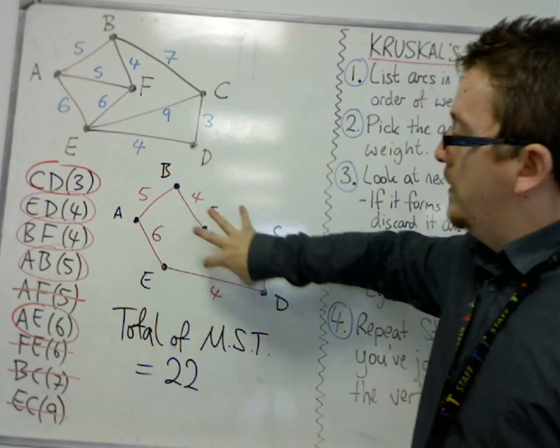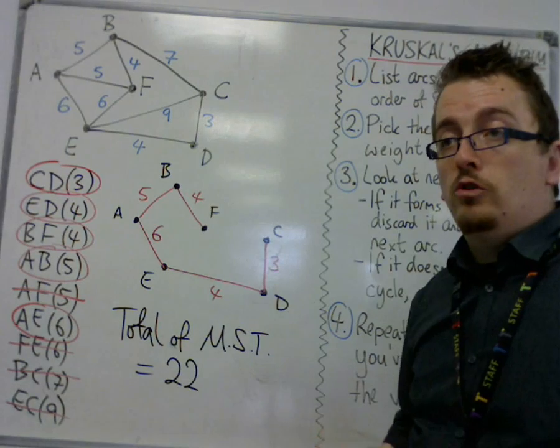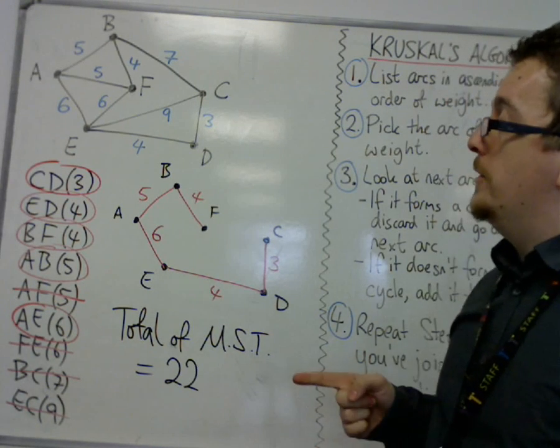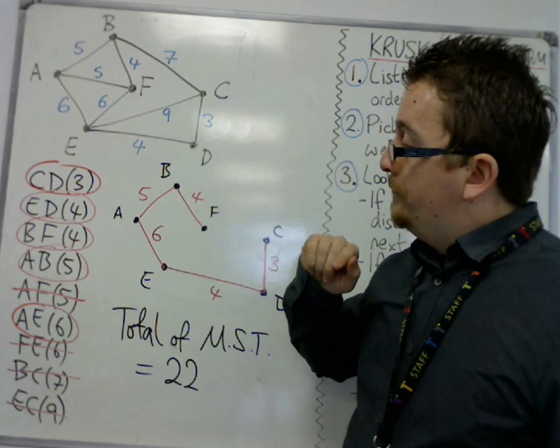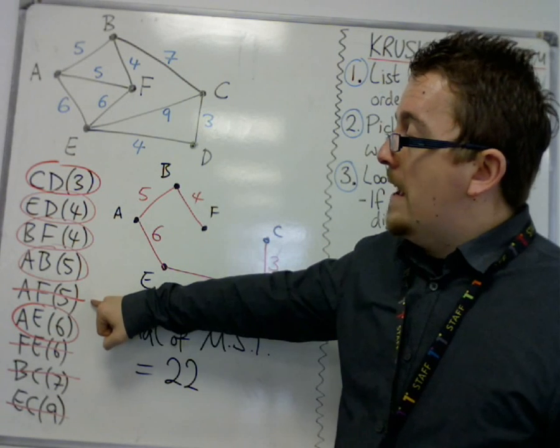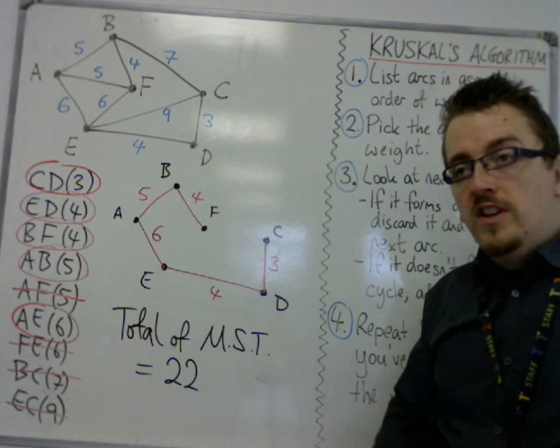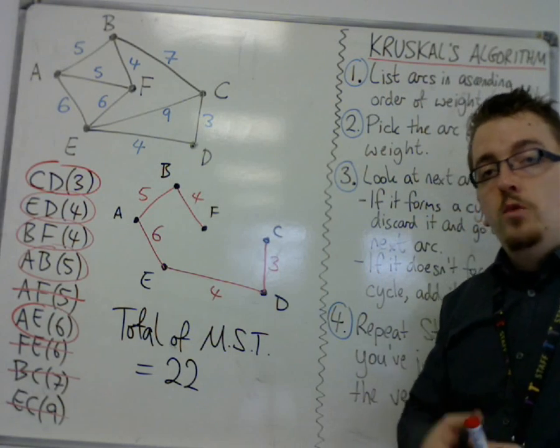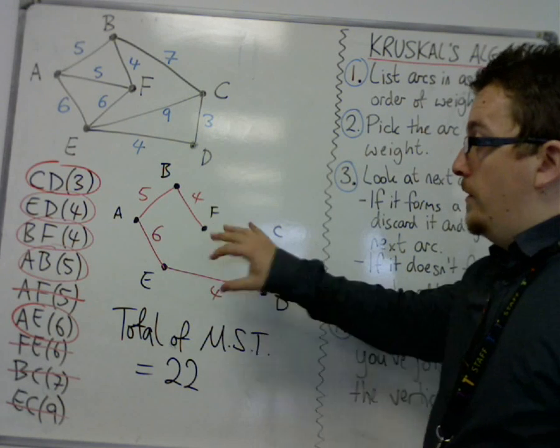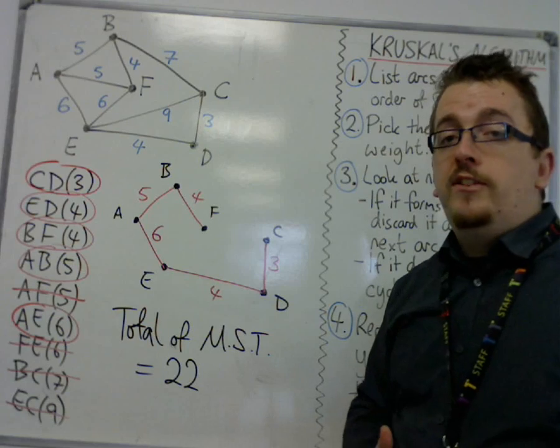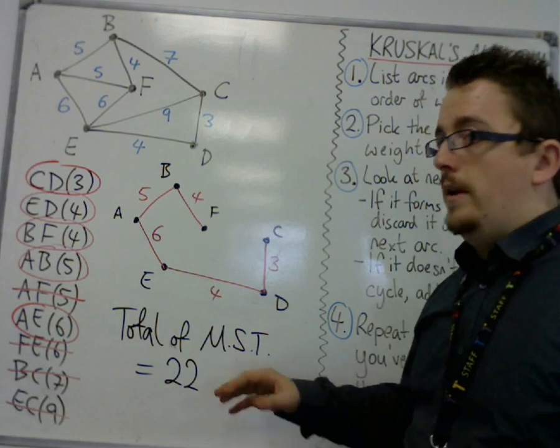This is itself a minimum spanning tree, because there can be more than one way of doing it. So we could have chosen AF instead of AB, for example, if you put them around the other way. So if you had done that, then you will have got a slightly different looking minimum spanning tree, but it would have been still 22. 22 is the minimum.